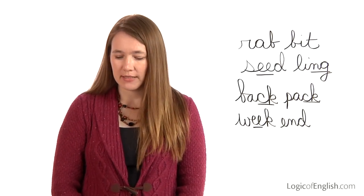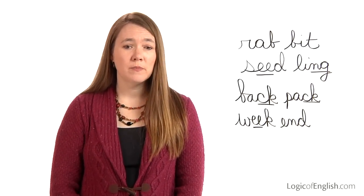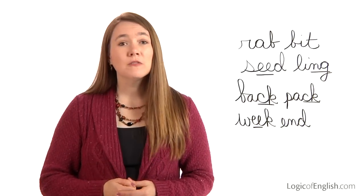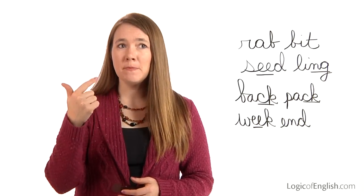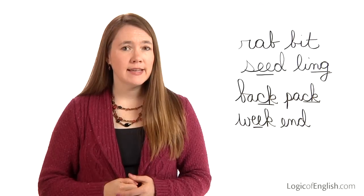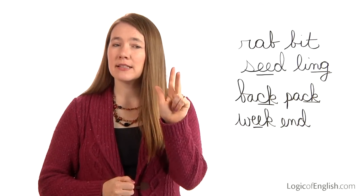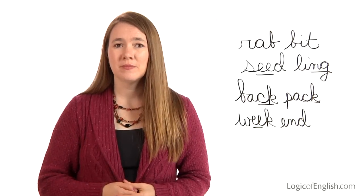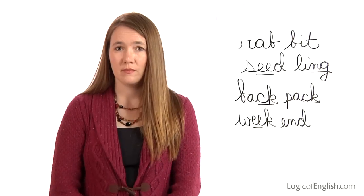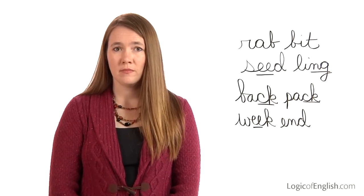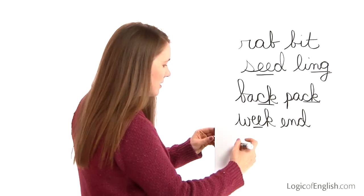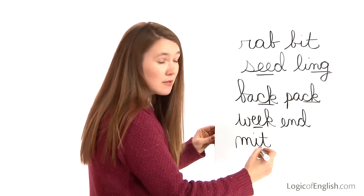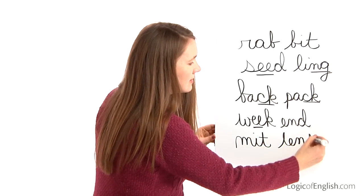Number five is mittens. These mittens are warm. How many syllables in mittens? Two. The first syllable is mitt: M, i, t. The second syllable is tens: T, e, n, s. Go ahead and write mittens. The first syllable is mitt: M, i, t. The second syllable is tens: T, e, n, s.